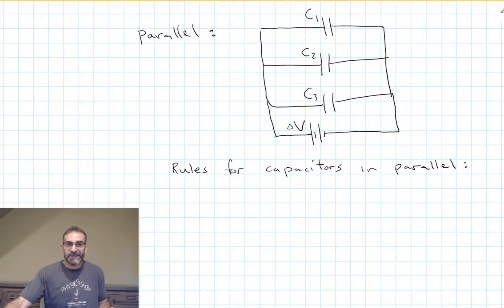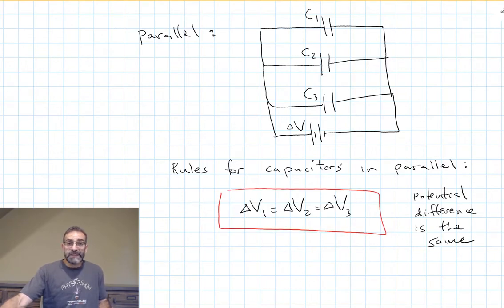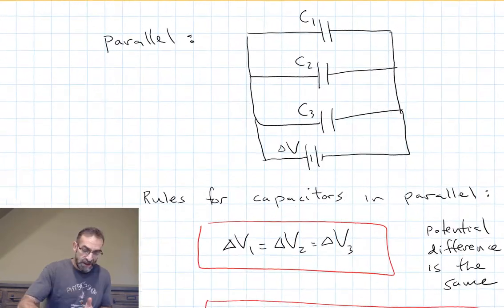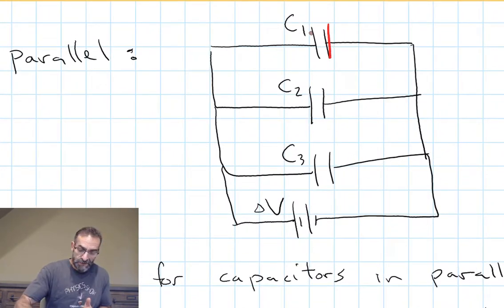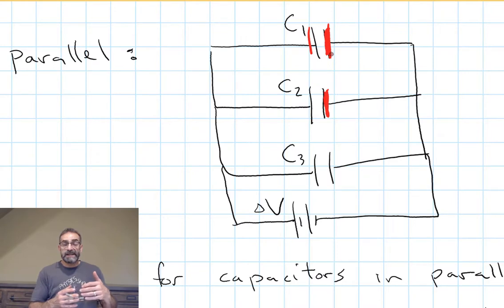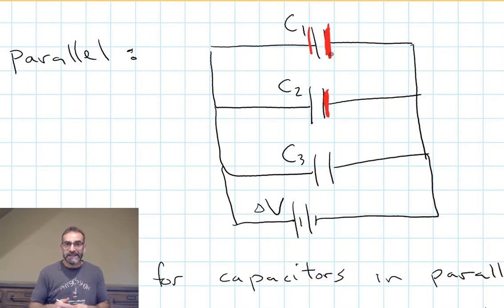Now let's look at the rules for capacitors in parallel. The potential difference across each capacitor in parallel is the same, and the equivalent capacitance is just the sum of the individual capacitances: C_equivalent equals C1 plus C2 plus C3, and so on. I can imagine that fairly easily — if I have capacitor C1 with a certain plate area, and I hook up another capacitor in parallel, I'm basically adding the plate area of capacitor 2 to that of capacitor 1, which just makes a bigger capacitor. I can add the two together to get the new capacitance. If you want to derive it, you can follow the same steps I used for capacitors in series.